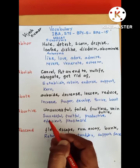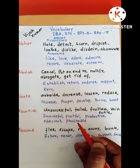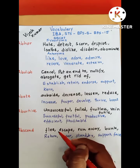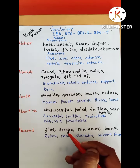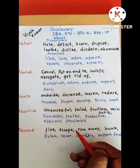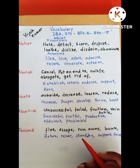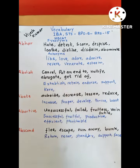And its antonyms are successful, fruitful, productive, efficient, profitable. Abscond means escape, runaway, bunk. And its antonyms are return, recur, standby, support, and face. That's all for today. Thank you very much for watching, so patient.